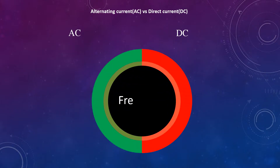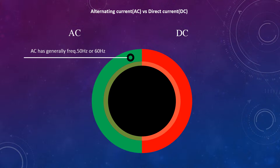Frequency: AC has generally a frequency of 50 Hz or 60 Hz. DC has zero frequency.